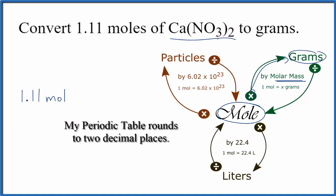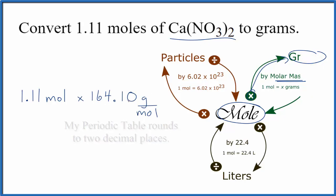For calcium nitrate, we have a molar mass of 164.10 grams per mole. Grams per mole is the unit for molar mass.